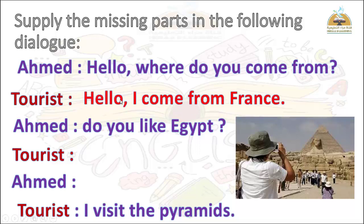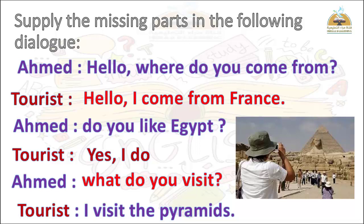هنا الإجابة هتبقى: Tourist: Hello. I come from France. طبعا حزفنا Where do وحولناها لـ I come from، وجبنا اسم بلد وهو France. أحمد بيقول: Do you like Egypt? ده helping verb فلازم تجاوب yes أو no. Tourist بيرد: Yes, I do. أحمد بيسأله: What do you visit? Tourist بيرد: I visit the pyramids — يعني أنا أزور الأهرامات.